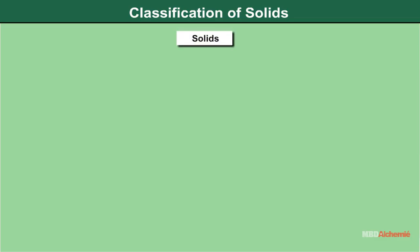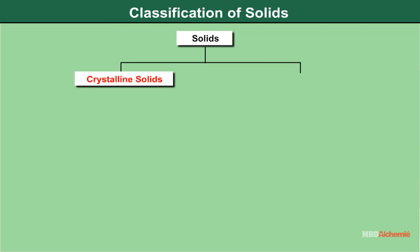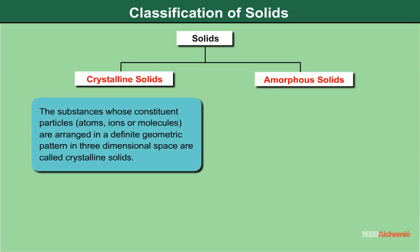Classification of solids: Solids can be classified as crystalline solids and amorphous solids. Crystalline solids are substances whose constituent particles — atoms, ions, or molecules — are arranged in a definite geometric pattern in three-dimensional space. The regular arrangement of the constituents extends throughout the three-dimensional space network of crystals.